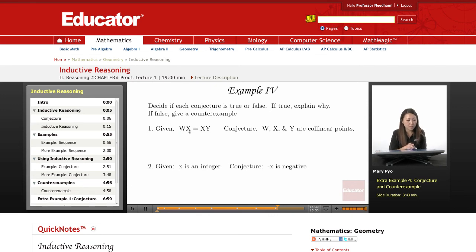So given is that WX equals—or I'm sorry—XY, and the conjecture is that W, X, and Y are collinear points.